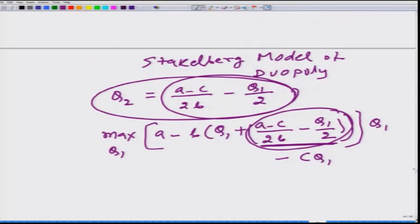So if we solve this problem, what would be the profit maximizing condition? A minus B[Q1 plus (A minus C)/2B minus Q1/2] minus B(1 minus 1/2) multiplied by Q1 minus C has to be equal to zero.